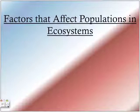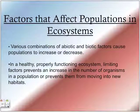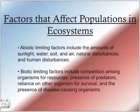Factors that affect populations in ecosystems. Various combinations of abiotic and biotic factors cause populations to increase or decrease. In a healthy, properly functioning ecosystem, limiting factors prevent an increase in the number of organisms in a population or prevent them from moving into new habitats. Abiotic limiting factors include the amount of sunlight, water, soil, and air, natural disturbances, and human disturbances.